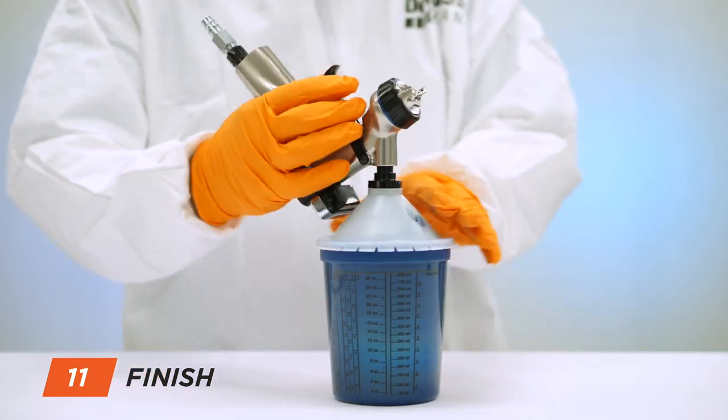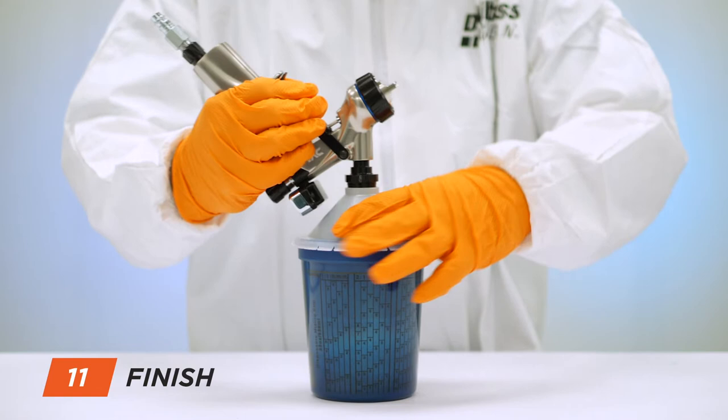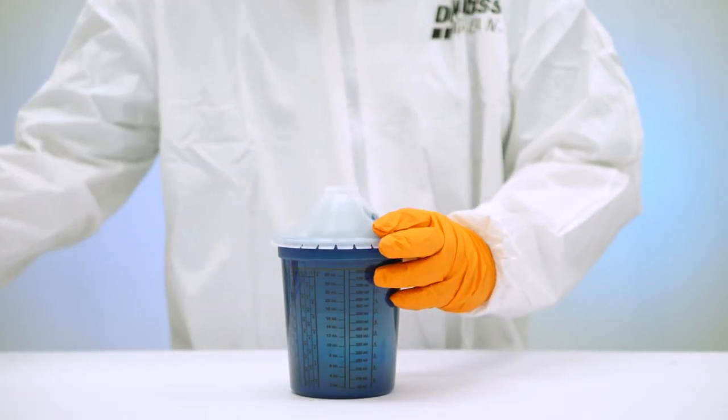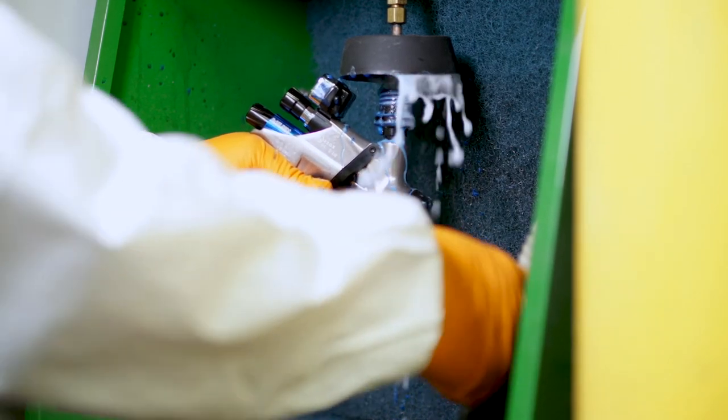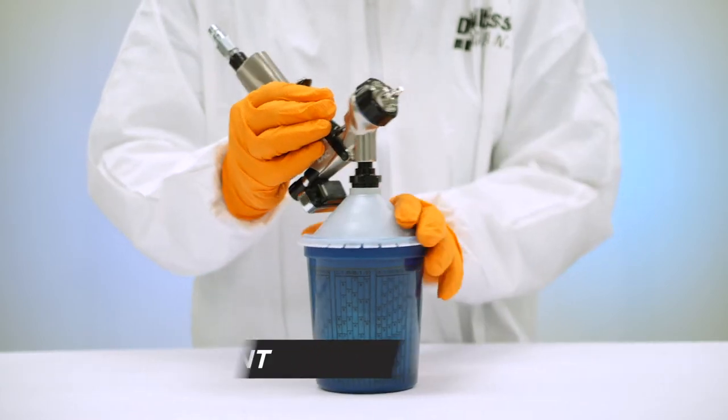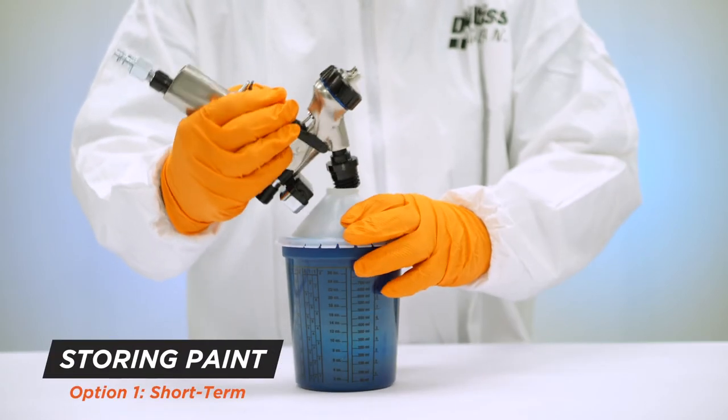Holding the cup and lid unit, turn the gun counterclockwise to remove the gun and adapter from the lid. If the paint job is complete, properly clean the spray gun according to the manufacturer's instructions. If there is remaining paint that needs to be saved and stored, there are two options.